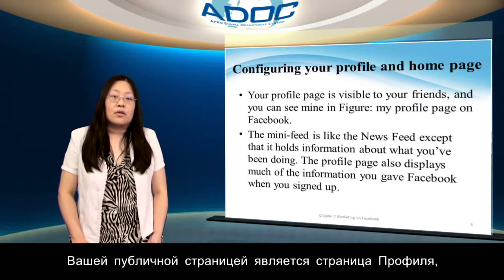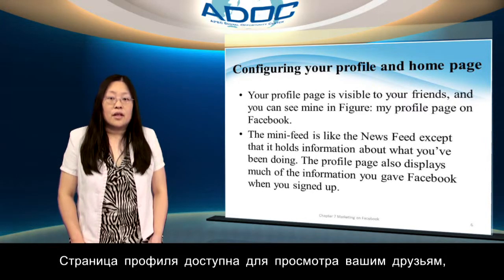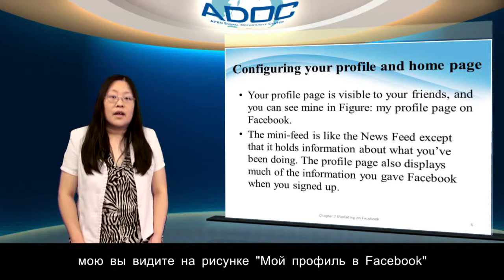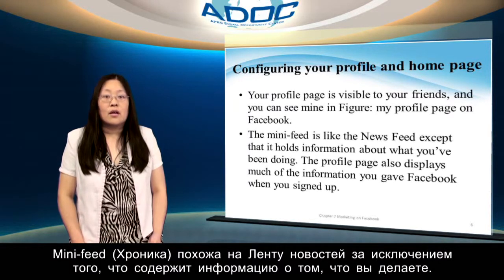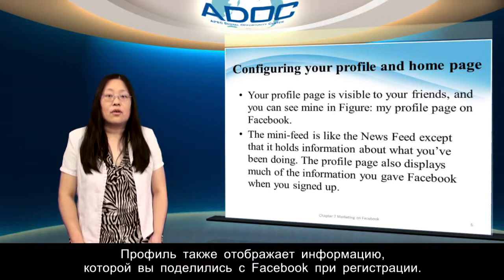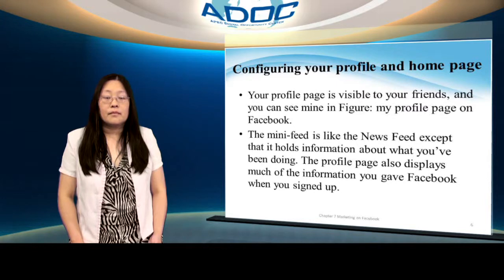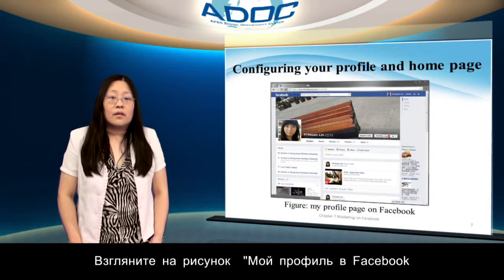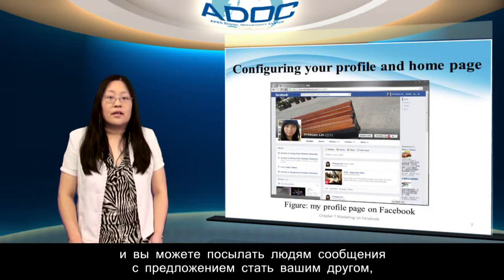Your public page is your profile page, which you can see by clicking the profile link. Your profile page is visible to your friends. The mini feed is like the news feed, except that it holds information about what you've been doing. The profile page also displays much of the information you gave Facebook when you signed up.